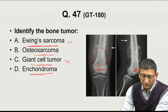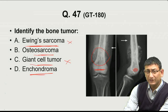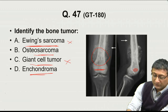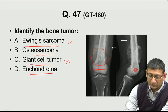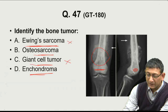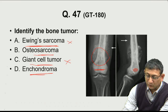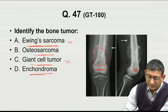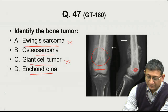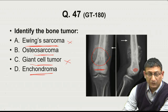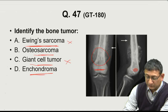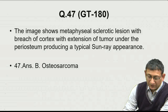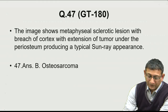Enchondroma usually involves small bones of hands and feet, so that is also out. Osteosarcoma seems to be the right choice. Moreover, there is a breach in the cortex and a sunray appearance, which also goes in favor of osteosarcoma.